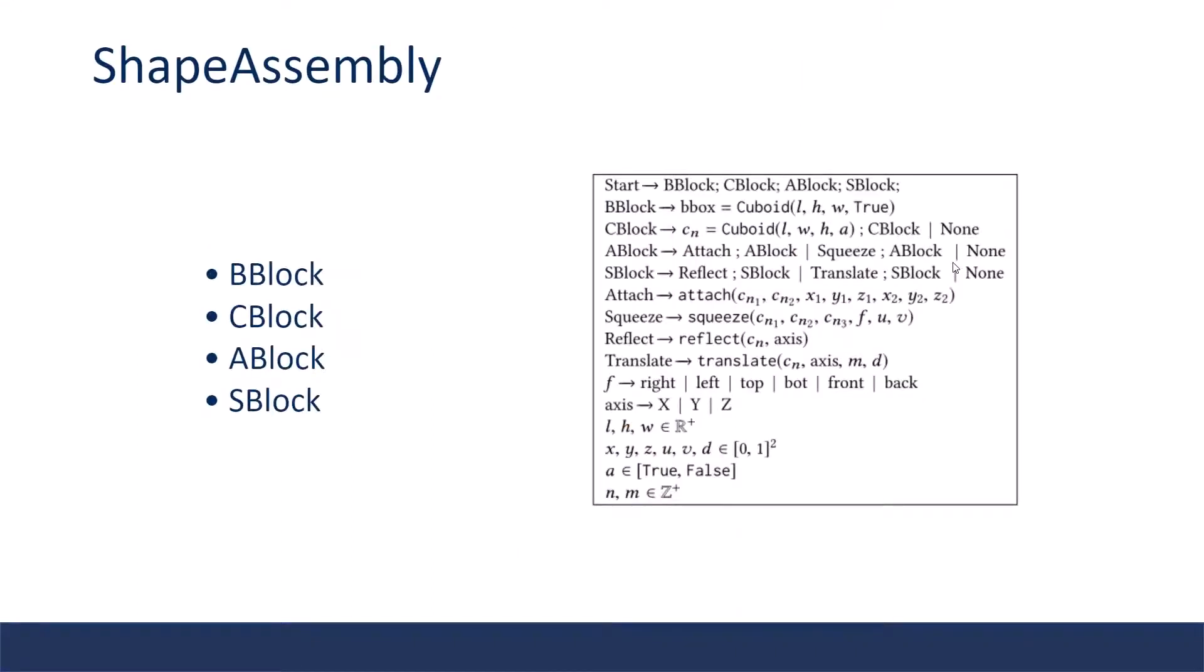Now let's move on to the grammar of the language. The Shape Assembly program consists of four main blocks. The B block declares the bounding volume of the overall shape. This bounding volume is treated as a physical entity to which other parts can be connected. The C block declares all the cuboid parts. The A block are commands that connect cuboids. And the S block generates symmetry groups. They are macro commands.